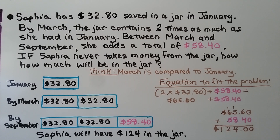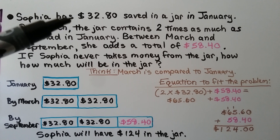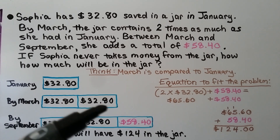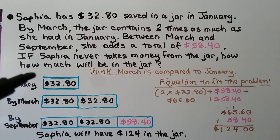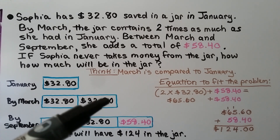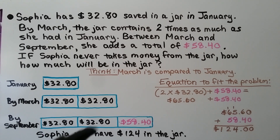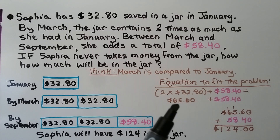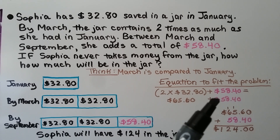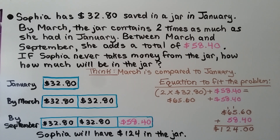Sophia has $32.80 saved in a jar in January. By March, the jar contains 2 times as much as she had in January. Between March and September, she adds a total of $58.40. If Sophia never takes money from the jar, how much will be in the jar? March is compared to January — we know January is $32.80, and by March it's 2 times as much. By September, it's the March amount plus $58.40. So 2 times $32.80 equals $65.60, and adding $58.40 gives us $124. Sophia will have $124 in the jar.